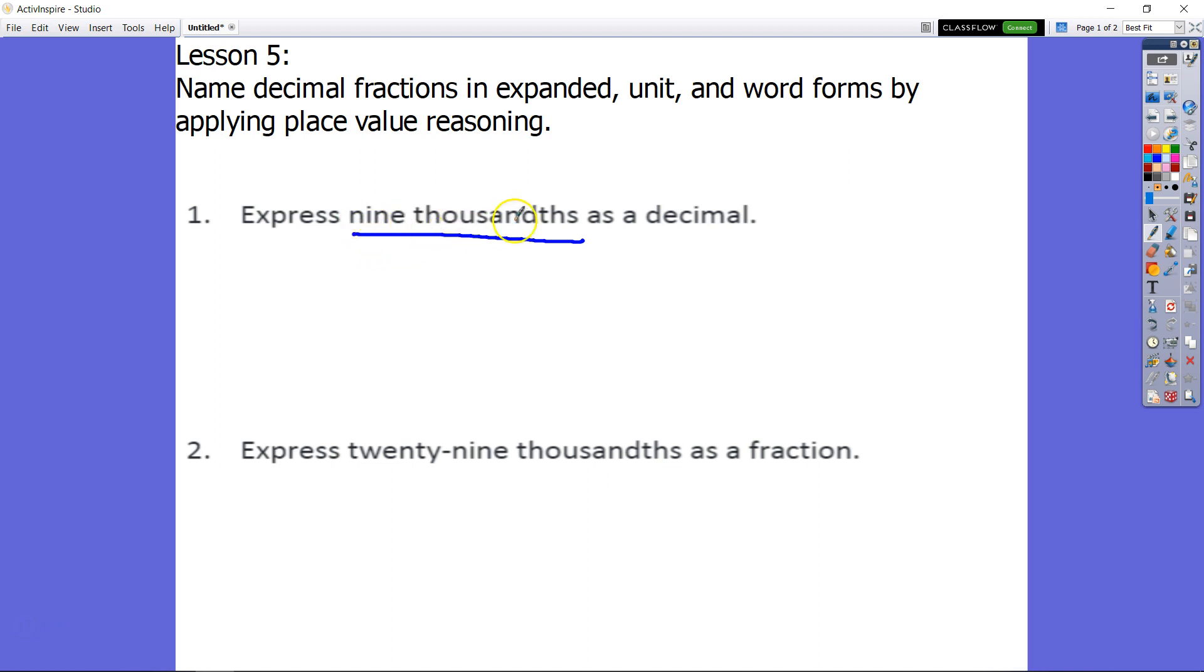Express nine thousandths as a decimal. I like to write my nine first, and then I say, what place value is it going to be in? It's in the thousandths place, so I know I have a placeholder in the hundredths, a placeholder in the tenths, and my decimal. You can put a zero here, although it's not needed.